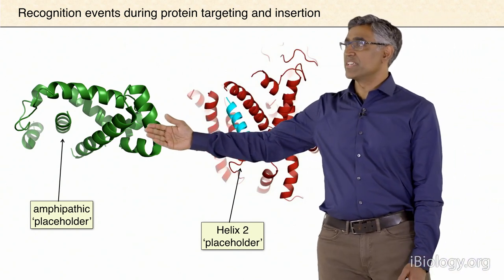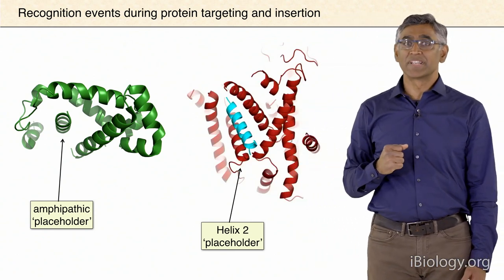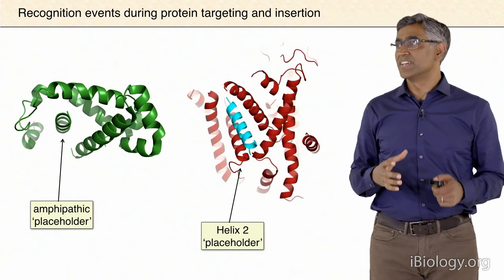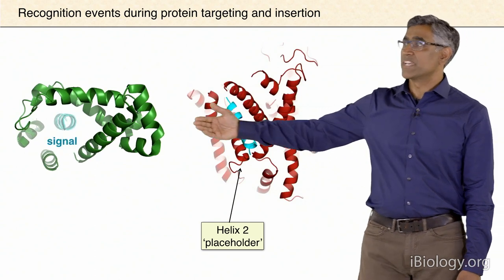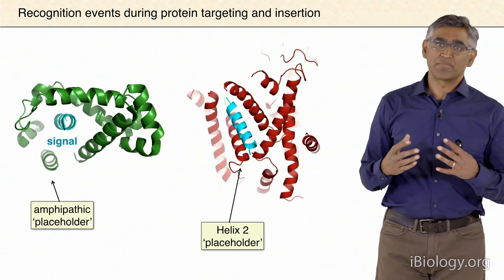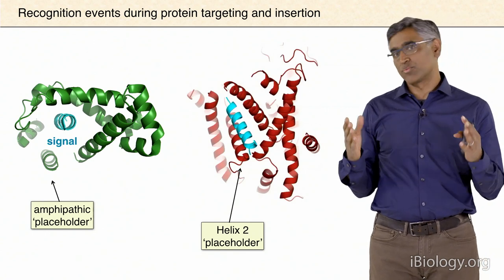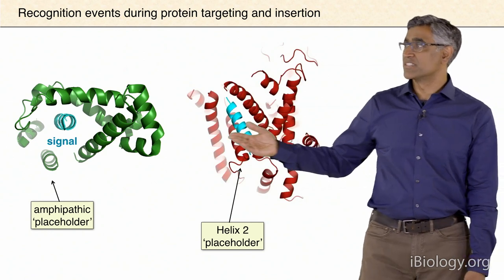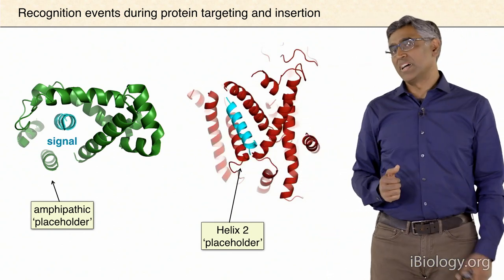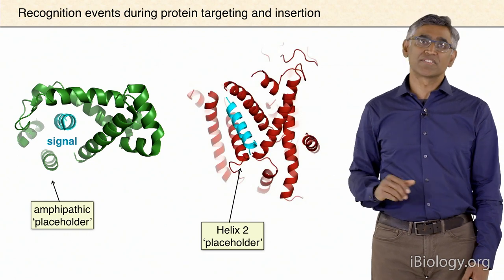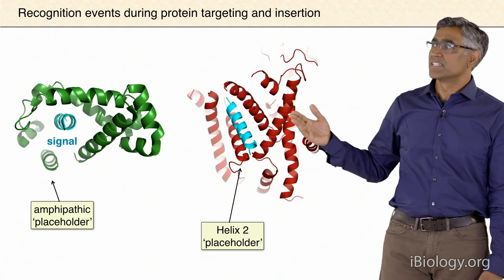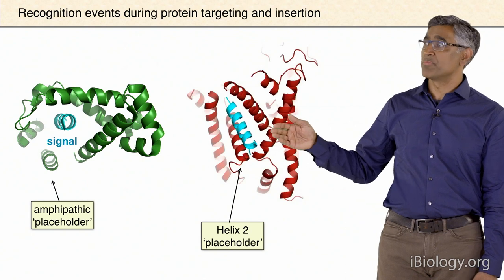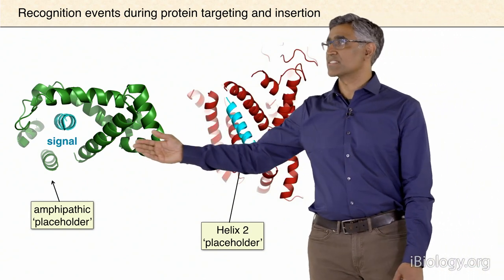This means that helix 2—whose job in the quiescent state is to form interactions with the other half of the lateral gate to keep the gate closed—is now replaced by a signal peptide which seems to form very similar interactions. The implication is that only sequences that are more stable or better at replacing those interactions than the starting helix 2 will successfully displace helix 2 in order to bind at this position. This is in many ways reminiscent of what happens with SRP: in both cases, the signal winds up binding at a position to take over a set of interactions that had been made by an intramolecular placeholder.